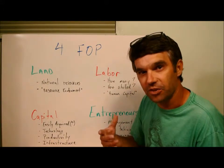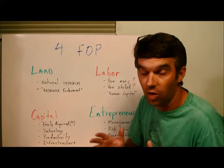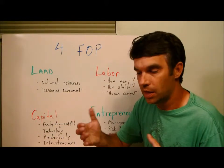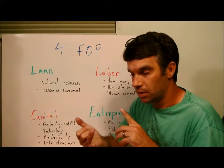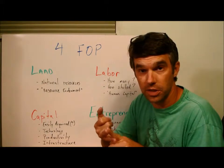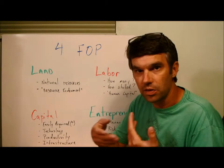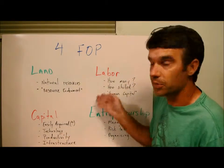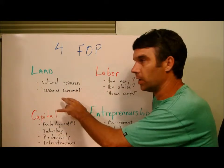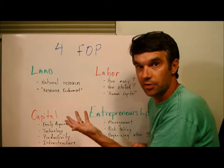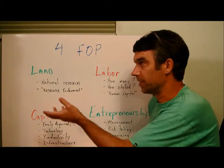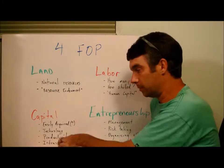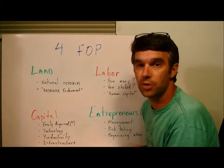Infrastructure — I almost think infrastructure should get its own category, but you do have to understand that infrastructure is capital on a much larger scale. A better set of roads, easier communication with better telephones and internet — all of those things are going to serve to increase the productivity of the other factors of production. If you've got really good land but you can't get to it because you don't have good roads, that's a problem. If you're a landlocked country, it's going to take infrastructure to get your products out to the rest of the world.